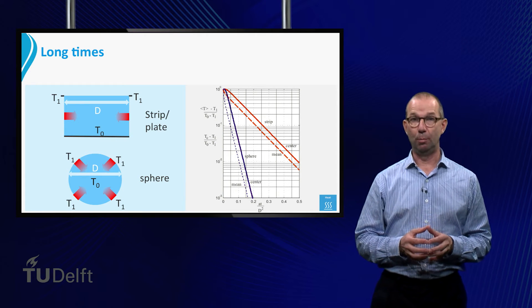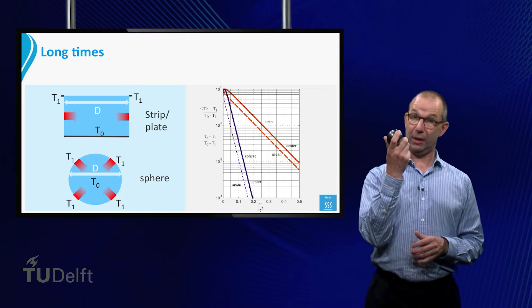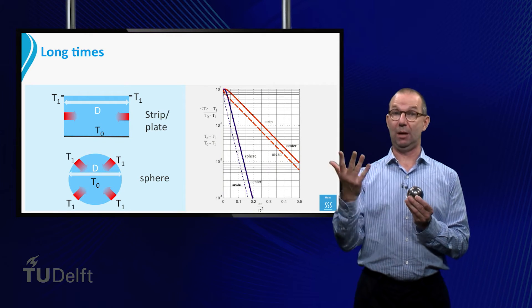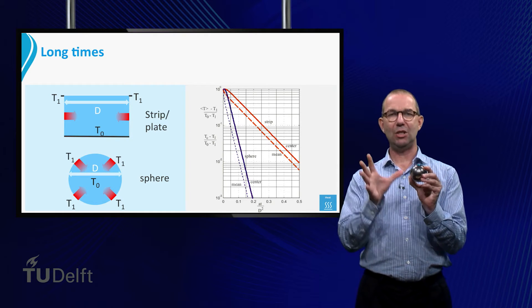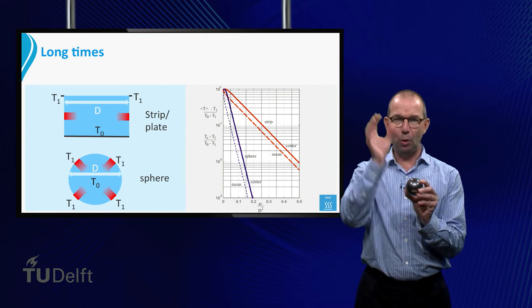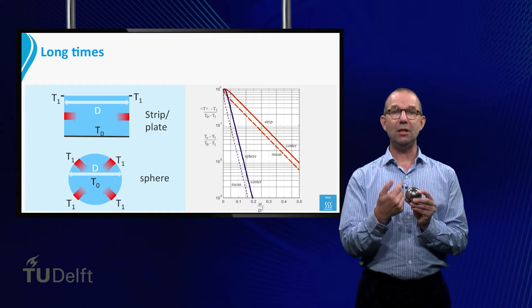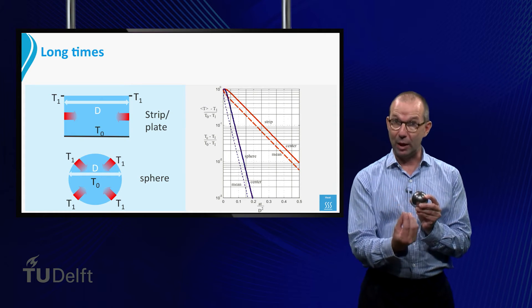Note that there are two more lines drawn in the graph. They belong to heating up a sphere. This goes much faster than a strip of the same size as is evident from the graph. This is logical, as the heat comes in from all directions. Moreover, when it moves inwards, it heats up less and less material as the interior gets quickly pretty small.